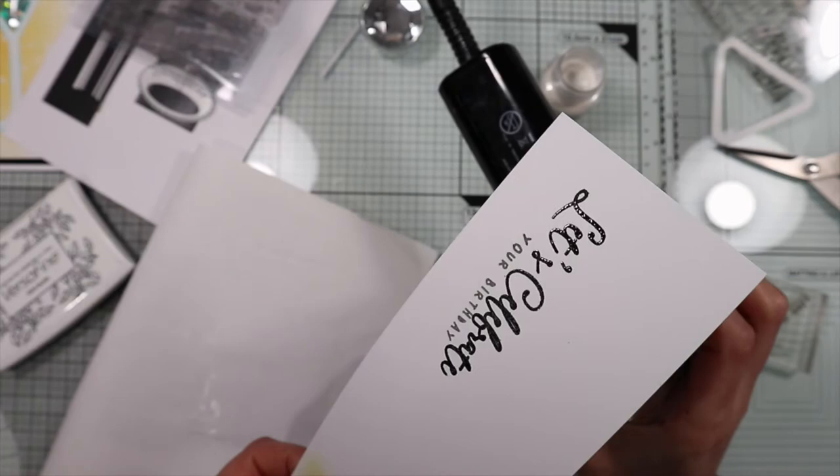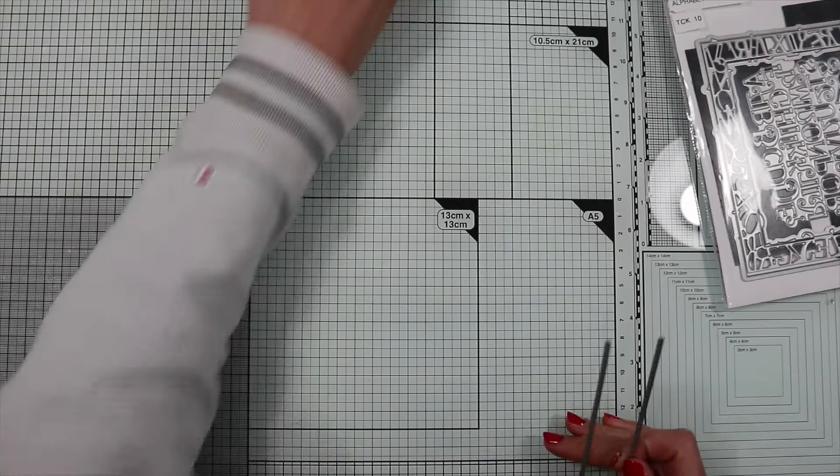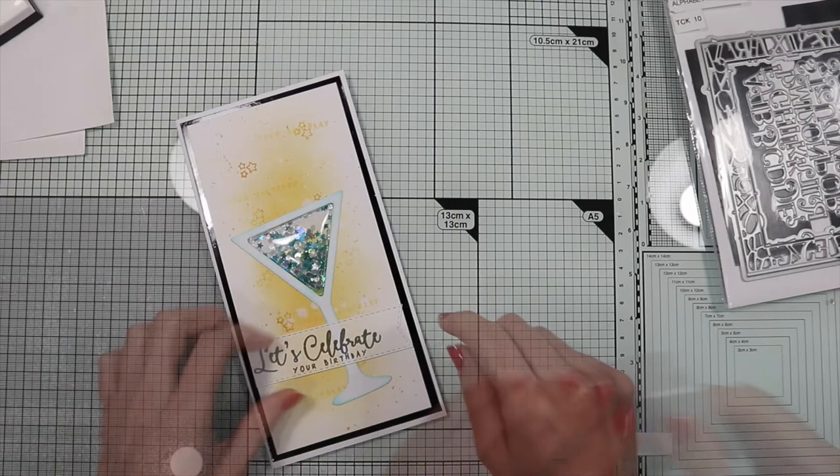From the Tonic Craft Kit number 10, this is the first kit I bought, I'm going to use this die to cut out the sentiment, creating a strip of paper with a fishtail on the right side. I glue the sentiment on the card base, putting some foam pad only on the right part of the banner.